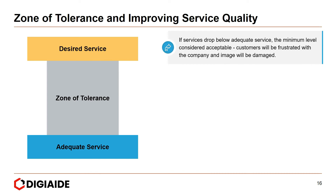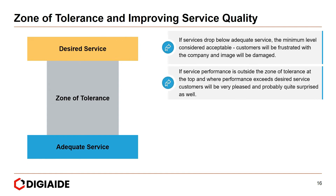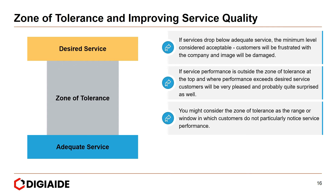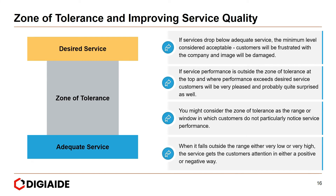Looking at the zone of tolerance diagram: if service drops below the adequate service level — the blue bar on the left indicating the minimum acceptable level — customers will be frustrated and the company's image will be damaged. If service performance exceeds the desired service — the yellow bar at the top — customers will be very pleased and probably quite surprised. The gray area in between is the zone of tolerance, a range where customers do not particularly notice service performance. When it falls outside this range, either very low toward the blue bar or very high toward the yellow bar, the service gets the customer's attention in either a positive or negative way.